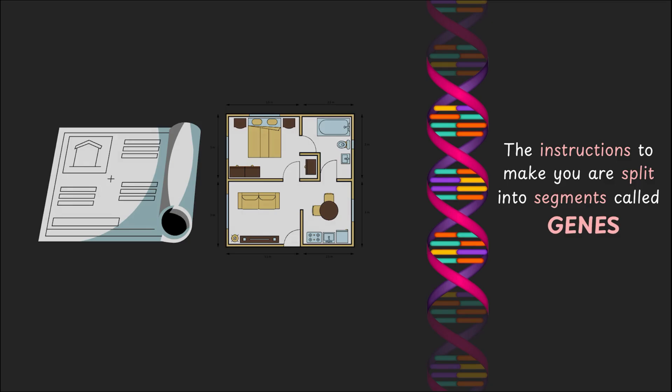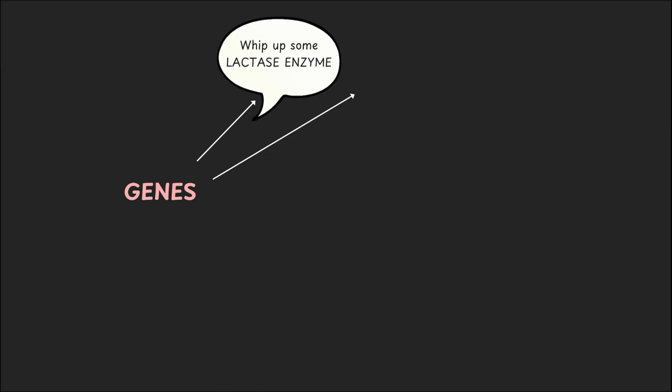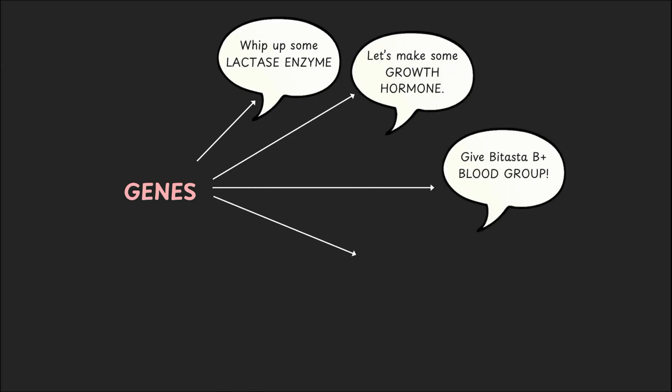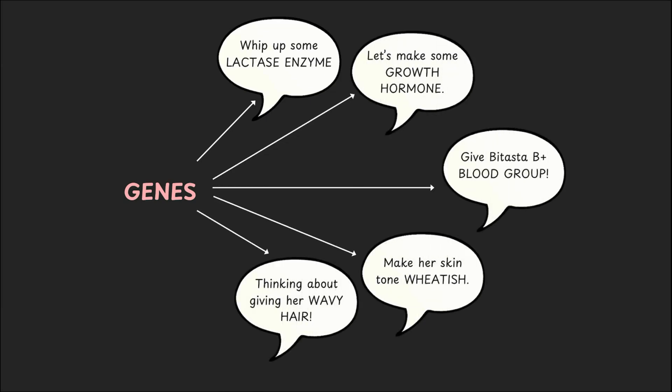And one gene might tell your body how to digest milk. Another might influence your height, another your blood group, skin color, hair type, you name it. In fact, humans have over 20,000 genes spread across 46 chromosomes. Each telling your body to do something or the other.